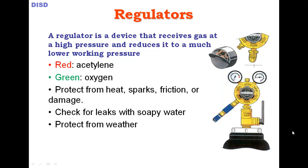After the regulator is attached, the cylinder valve should be opened just enough to indicate pressure on the regulator gauge, and all connections should be checked with a soap solution for leaks. Gradually open the valve and check that the regulator gauge meter is working properly. Before the regulator is removed from the cylinder, the cylinder valve must be closed and the cylinder cleaned and returned to the storage area.